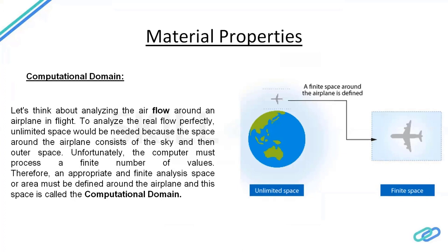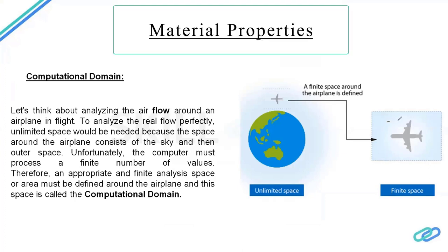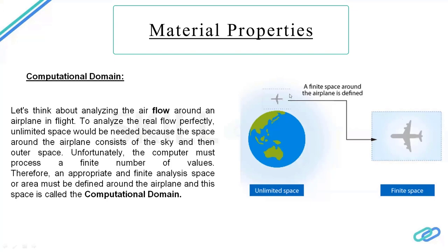This is the example for understanding the computational domain. If a domain is drawn too close to the body with the inlet nearby, the boundary interacts with the geometry, which is not correct. We need a finite space where the domain walls around the body — such as an aircraft — do not interact with the body itself, so the flow is not disturbed at that location.